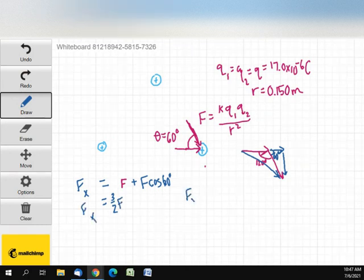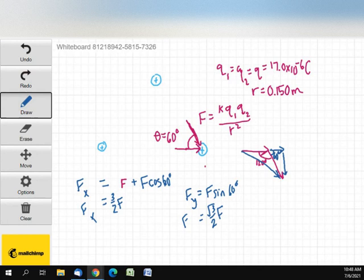Now, F sub Y is going to be F sine of 60 degrees, which is going to be the square root of three over two F, because the sine of 60 degrees is the square root of three over two. Now, I can use the Pythagorean theorem.